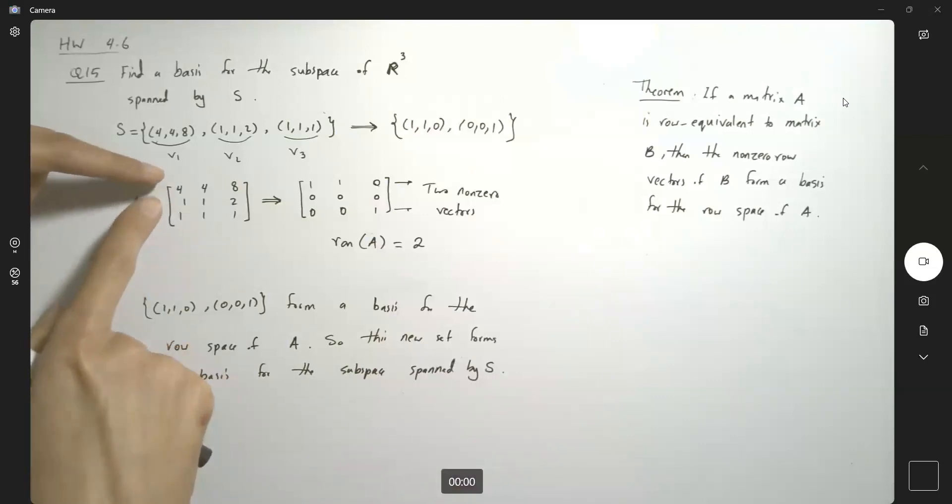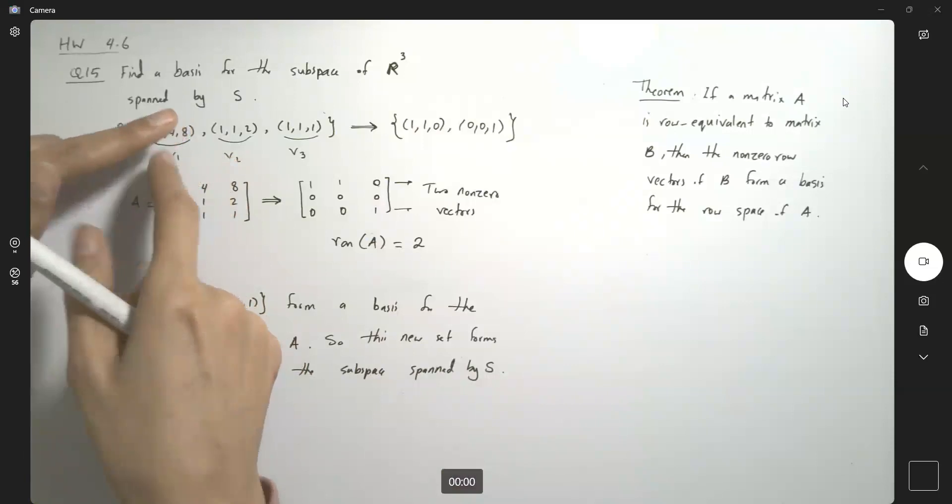You can basically see it right here. The very first two vectors, these two rows, they are multiples of each other. So we have to get rid of one of them.